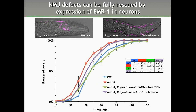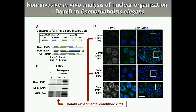The next step is to study nuclear organization specifically in the nervous system. The DAM-ID technique relies on an extremely low level of expression of the DAM fusions. We normally use the heat shock promoter without actual heat shock to achieve this. This means we cannot simply use a tissue-specific promoter to drive our DAM-ID fusions because that would result in too much expression.